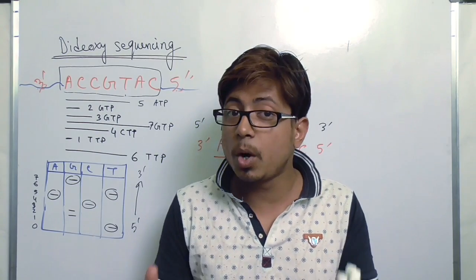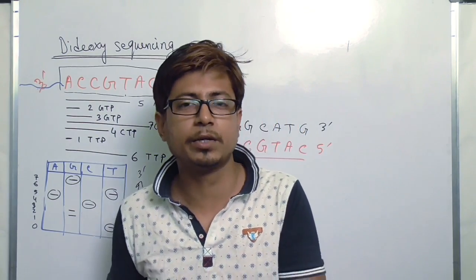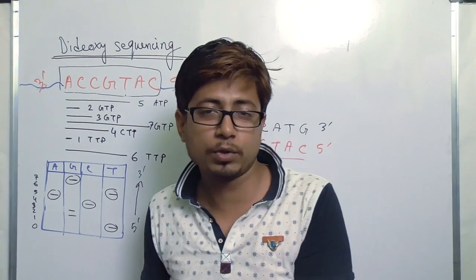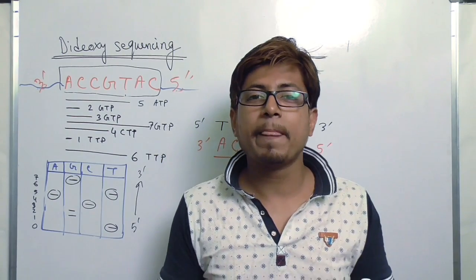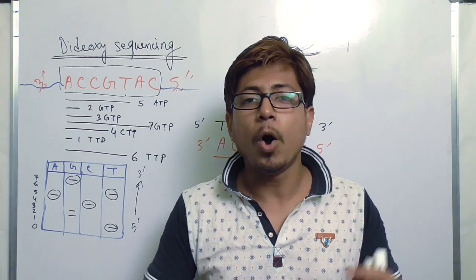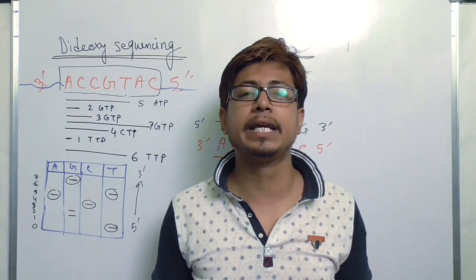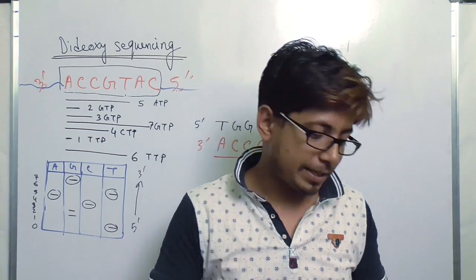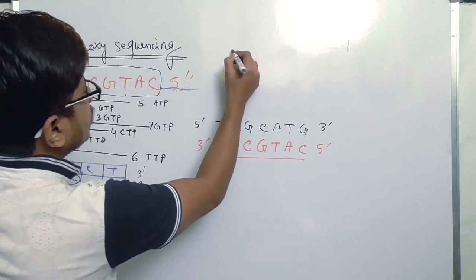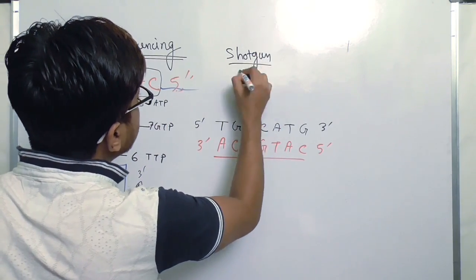So shotgun sequencing is not a unique sequencing like Sanger sequencing or Illumina sequencing or 454 sequencing or pyrosequencing. It's simply a method of compiling all the data from different sequencing and give us an idea about the huge genome like the human genome. So what we do here for the shotgun sequencing?